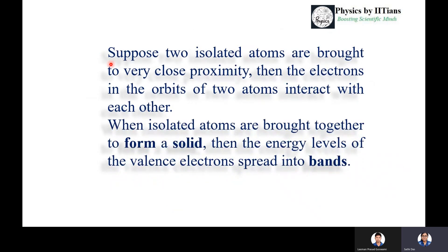Suppose there are two isolated atoms. If they are brought to very close proximity, the electrons in the orbit of these two atoms interact with each other. When considering isolated atoms, we get discrete energy levels — for example, a hydrogen atom has different energy levels, and similarly a sodium atom has different energy levels associated with it.